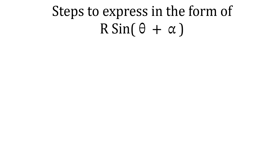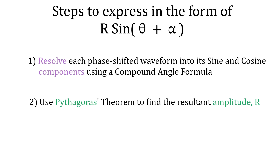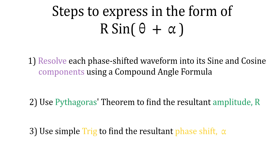We're going to find the resultant amplitude r and the resultant phase shift alpha for v3, the sum of the two voltages, expressed as r sine(ωt + α). The steps are: step one, resolve each phase-shifted waveform into its sine and cosine components using a compound angle formula. Step two, use Pythagoras's theorem to find the resultant amplitude r, then use tan to the minus one to find the resultant phase shift alpha.